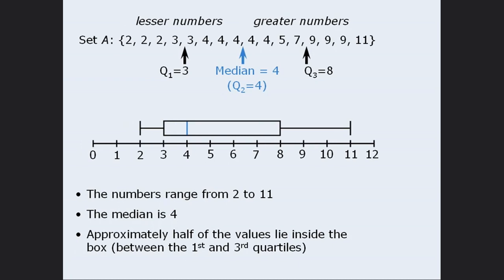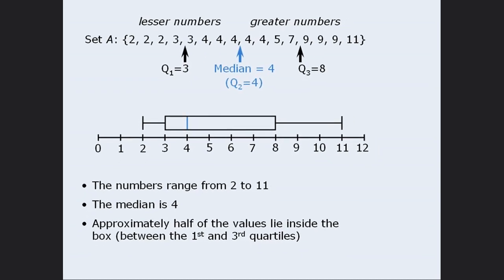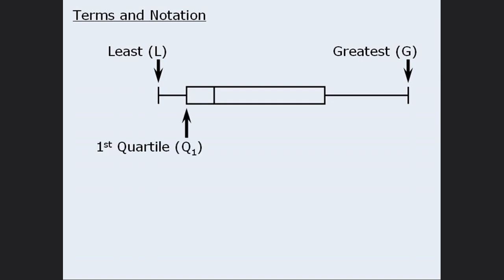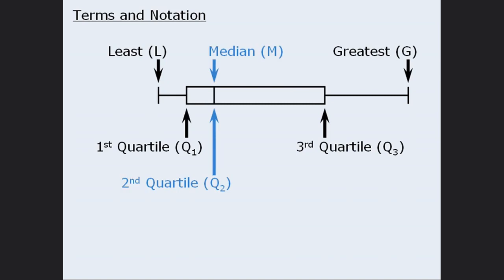You may have noticed that set A contains 16 values, and 16 is a multiple of 4, which allowed us to divide the set into 4 equal groups. You may be wondering what we'd need to do if the number of values is not a multiple of 4. We'll examine this in a few seconds. But first, let's briefly discuss some terms and notation related to box plots. The end tip represents the smallest value in the set, and the other tip represents the biggest value. The beginning of the box represents the first quartile, which is the median of the lesser values, and the end of the box represents the third quartile, which is the median of the greater values. The line inside the box represents the second quartile, which is the median of all of the numbers in the set.